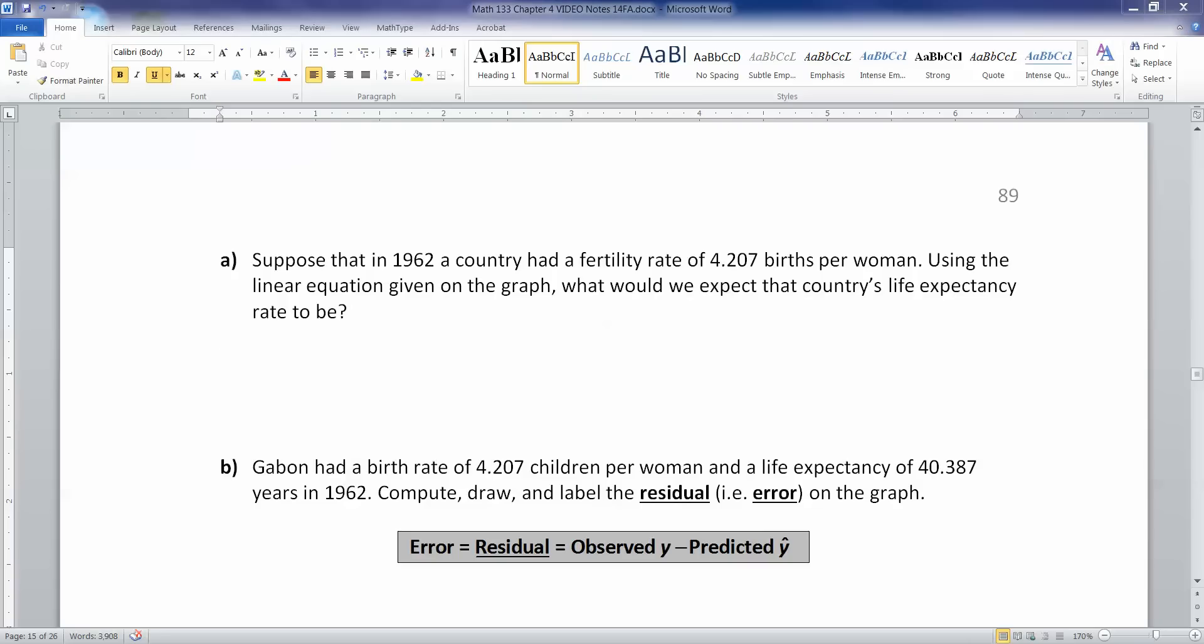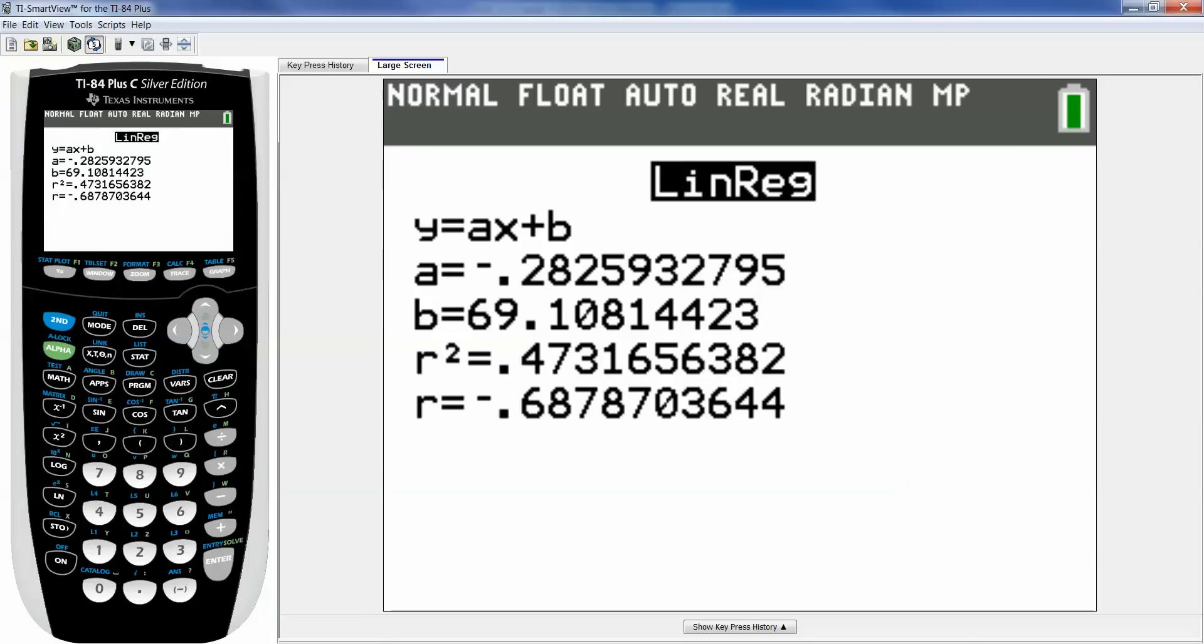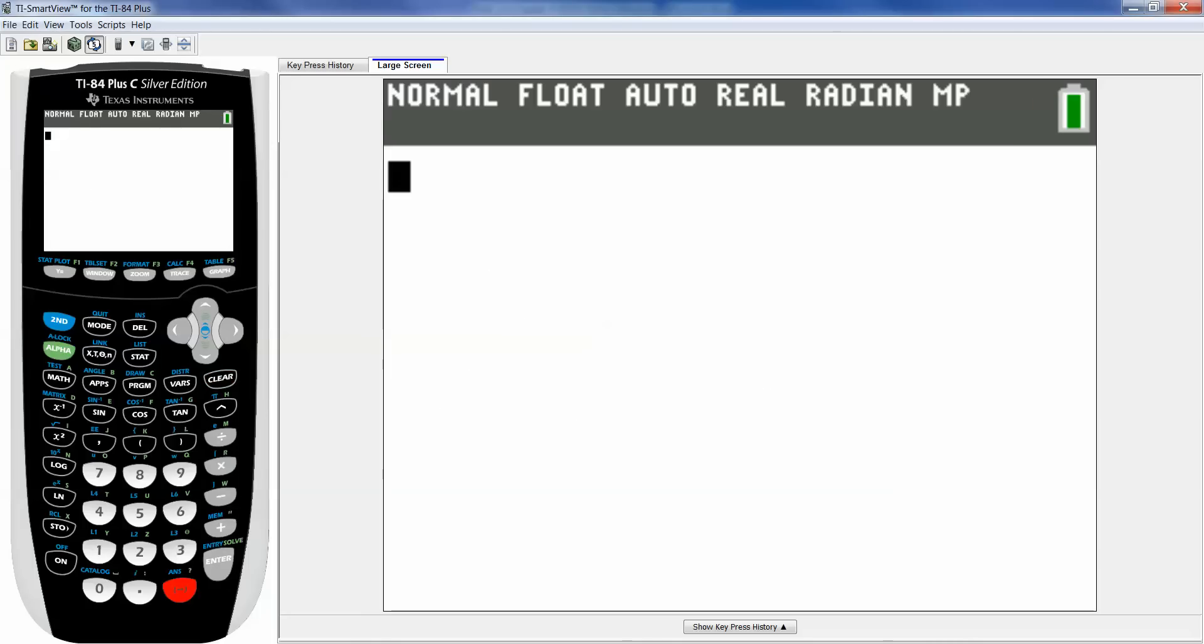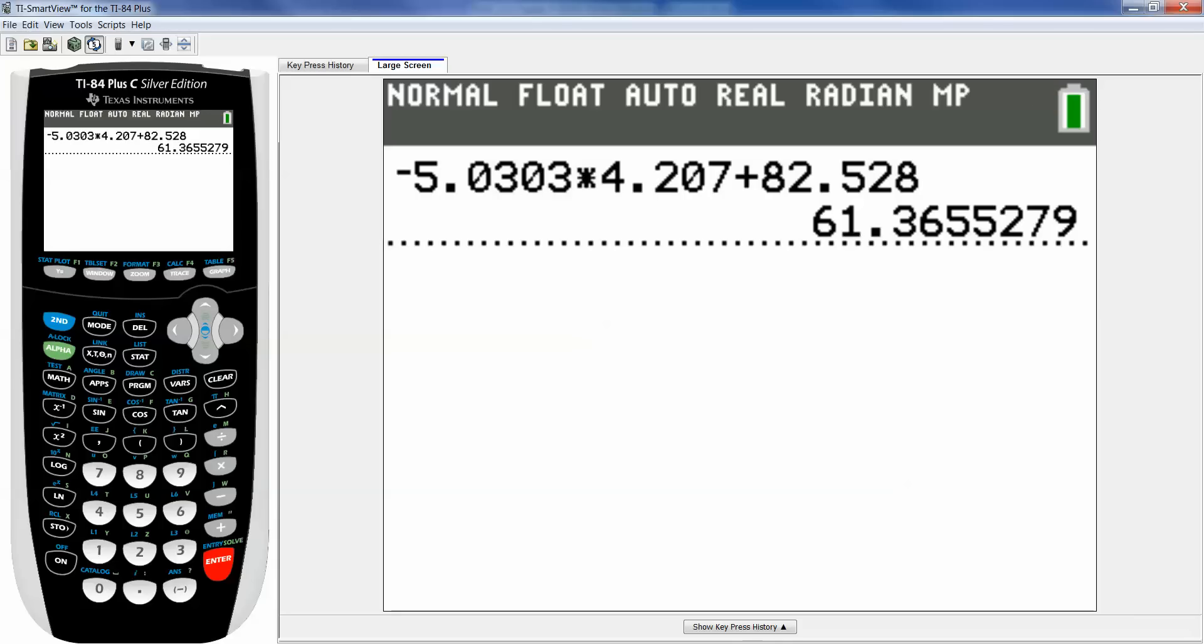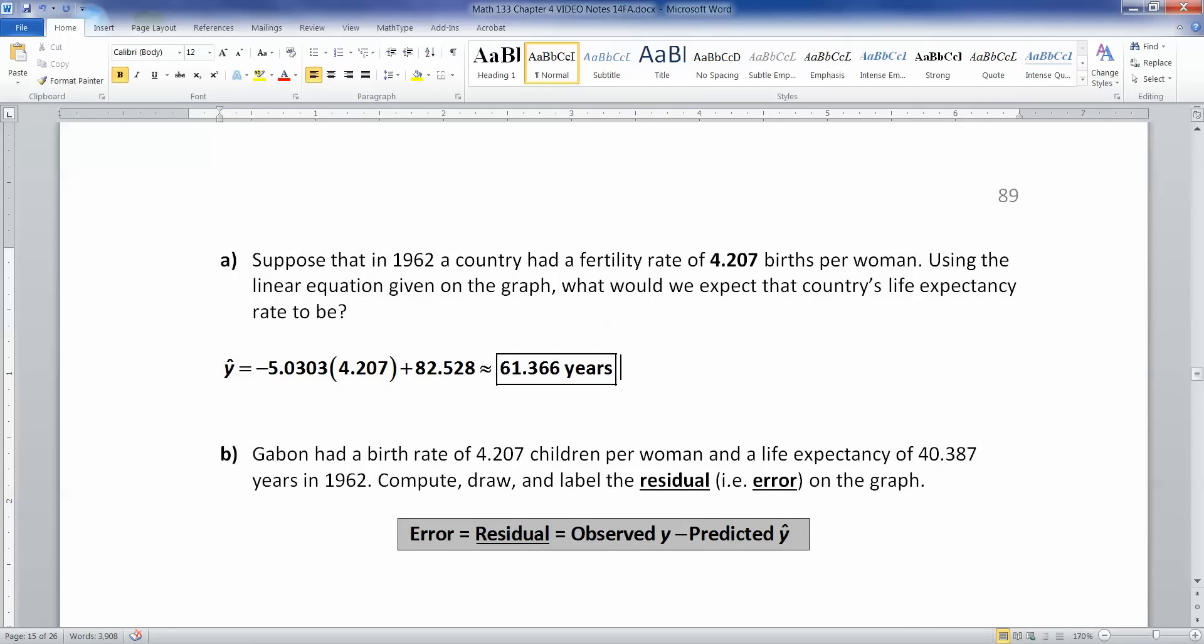Okay, so what we want to do is we want to substitute. We want to put the value of 4.207 in for x and then figure out what the y hat would be. And that would be about 61.366. And I would get that just by using the calculator. So negative, that's this little guy right down here, negative, not the subtraction sign. That's different. So 5.0303 times 4.207 plus 82.528. See, 61.366, just like I said. And of course, you want to give it units. And I put in a squiggly equals because it's about that much. We don't really expect it to be that. We expect it to be around there.